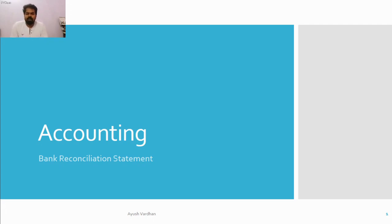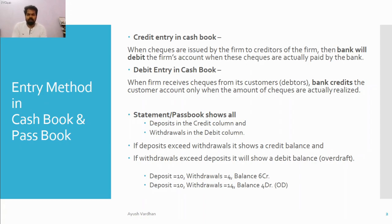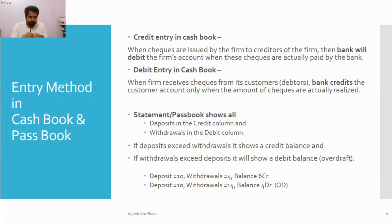Today we will see the bank reconciliation statement. We will start with entry methods — how do we make entries in the cash book and how do we make entries in the pass book. Once we make an entry in the cash book, what effect happens on the pass book, and similarly, when an entry is made in the pass book, what effect happens in the cash book. Basically, we don't make entries in the pass book — the pass book entry is made by the bank. We only maintain the cash book as per the records of the pass book.